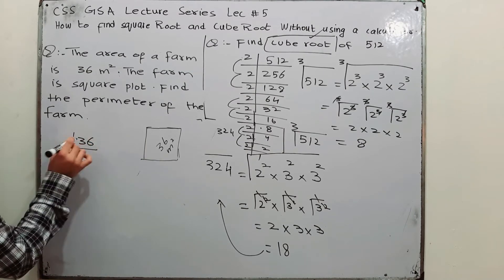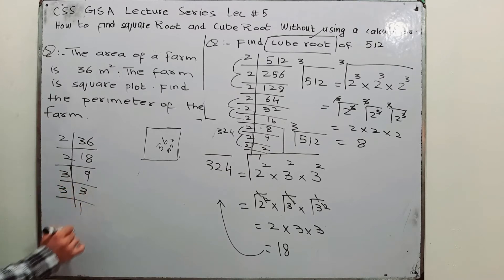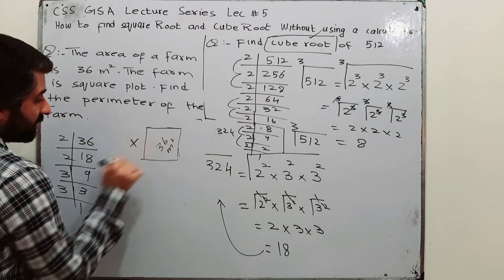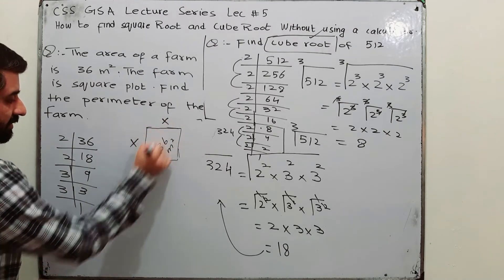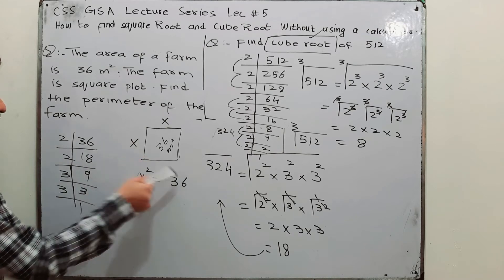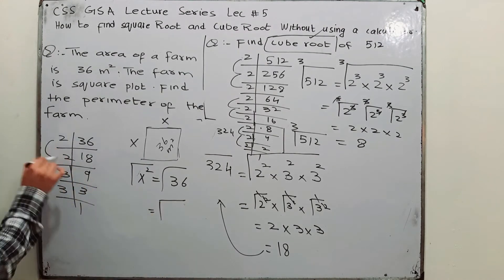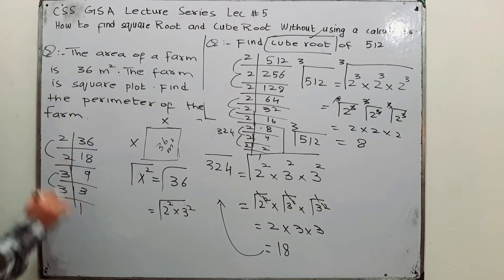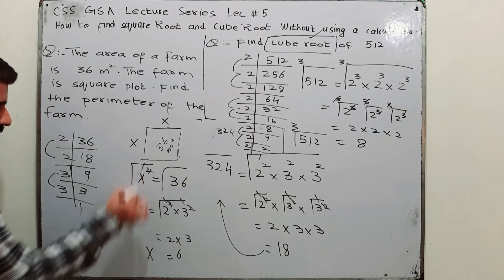We need to take the square root of 36. For prime factorization of 36: 2 × 18, 2 × 9, 3 × 3. If the length is x and width is x, then x × x = x² = 36, so we take the square root of 36. Writing 36 in square form: 2² × 3². Taking the square root — square and square root cancel — giving 2 × 3 = 6. So x = 6.